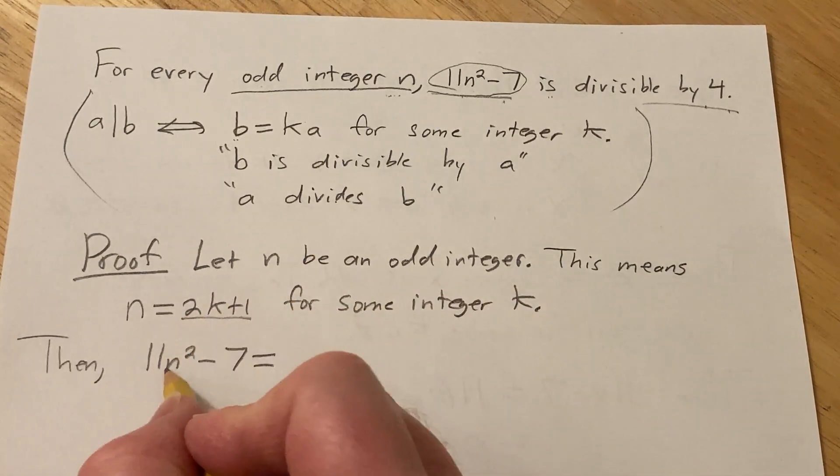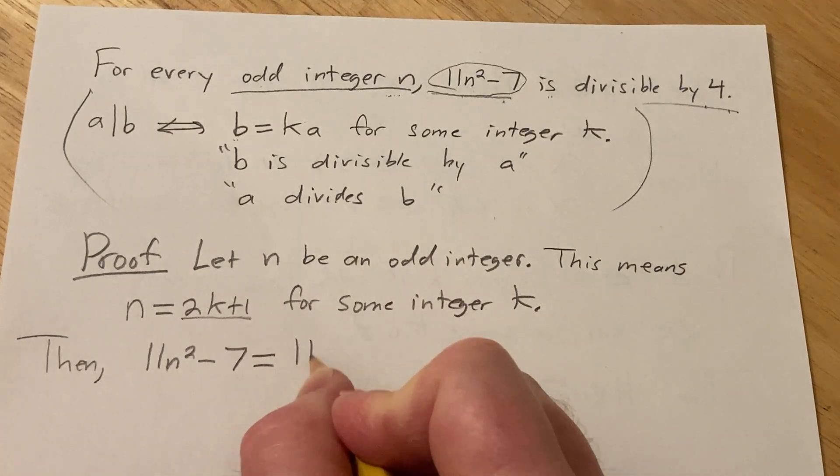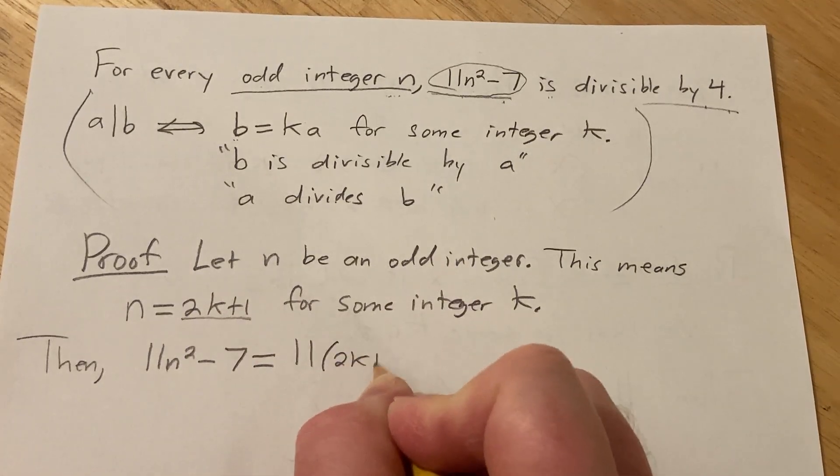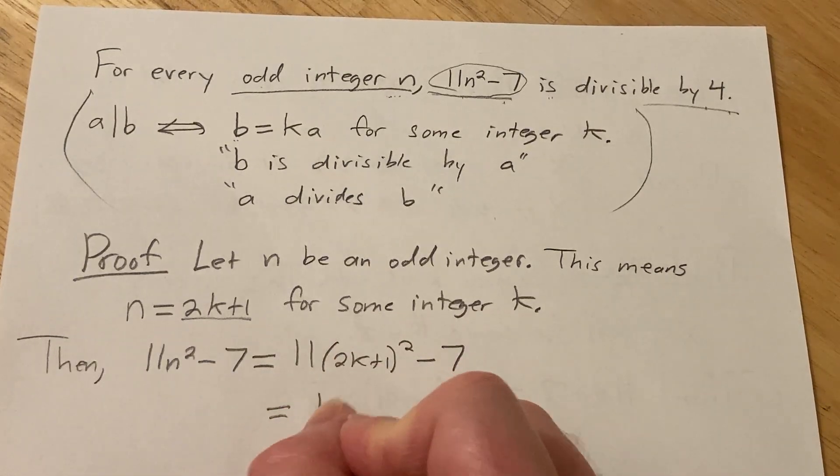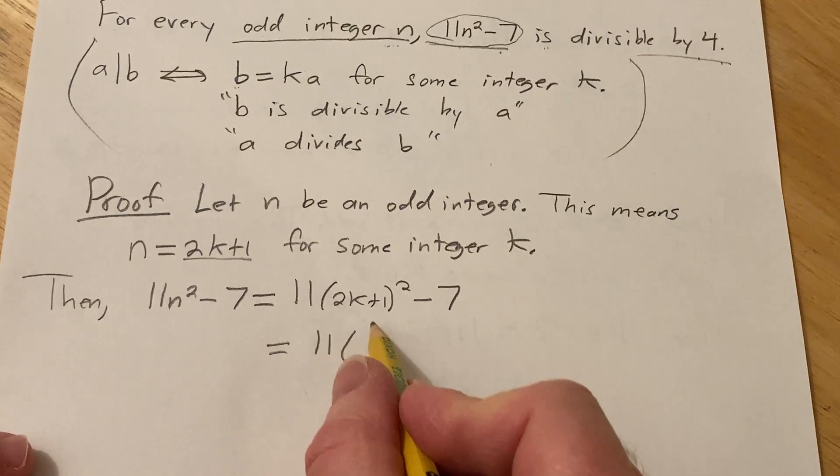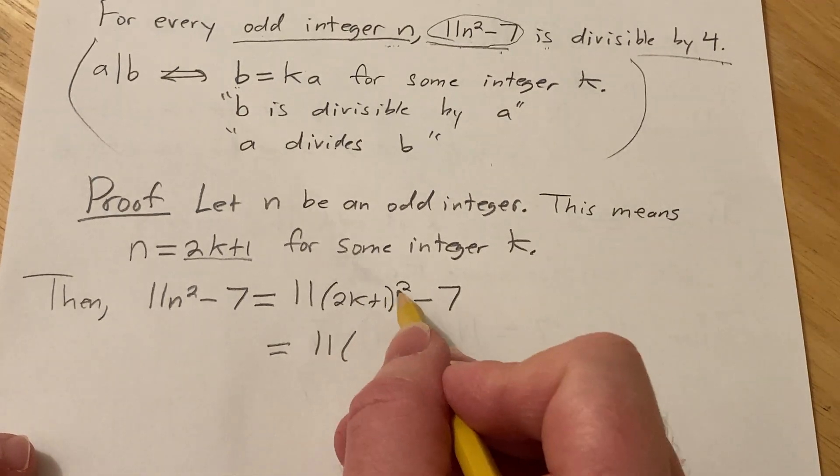well now we're going to take this and plug it in for the n. So we have 11(2k + 1)² - 7. And that's equal to 11. Well, 2k + 1 squared,